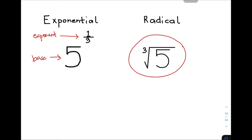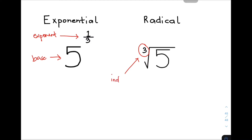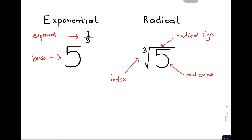On the other side, this radical expression — we have here the cube root of five. Let's have the parts of this radical expression. This smaller number is called the index. This symbol is your radical sign, and the expression or the number inside the radical sign is what you call the radicand. Those are the parts of an exponential form and radical expression.